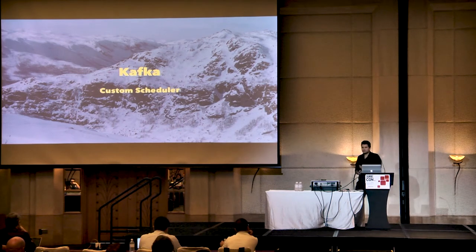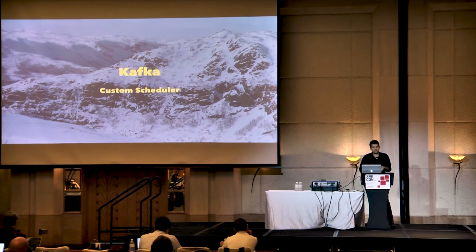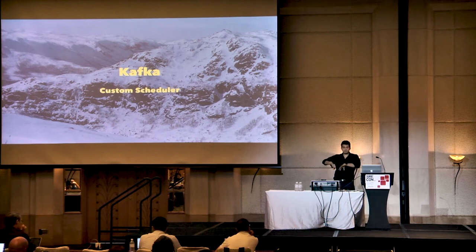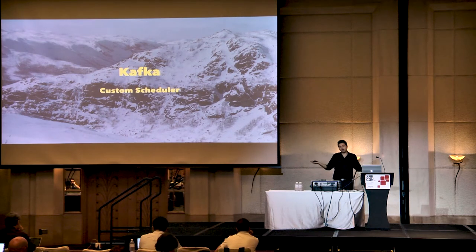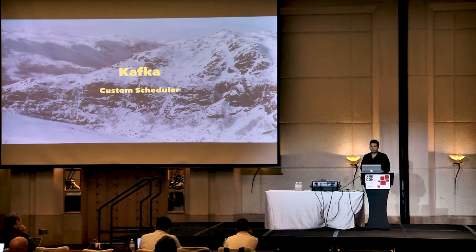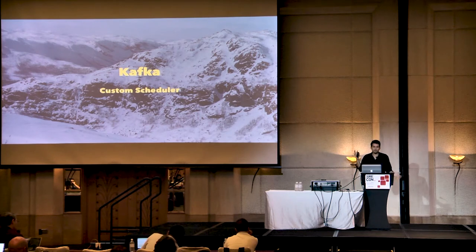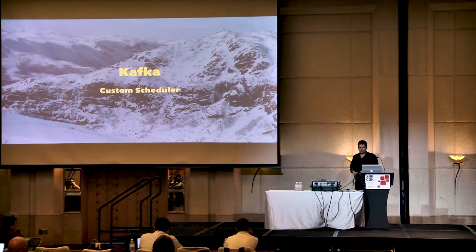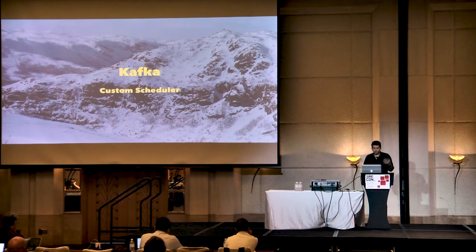If you know Kafka, if you kill a single Kafka node, nothing happens. Kill two, nothing happens. Kill three, nothing happens. But if you kill 90% of your Kafka nodes, you just lost all your data. Kafka obviously couldn't survive the majority of nodes going offline all at the same time. So we said, okay, we can't run Kafka on top of Mesos.